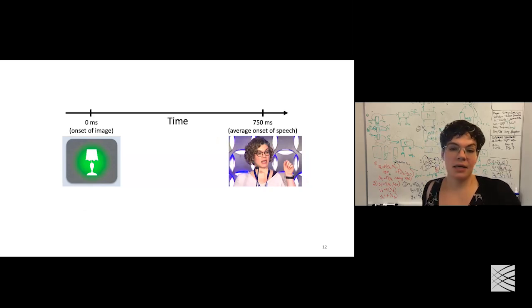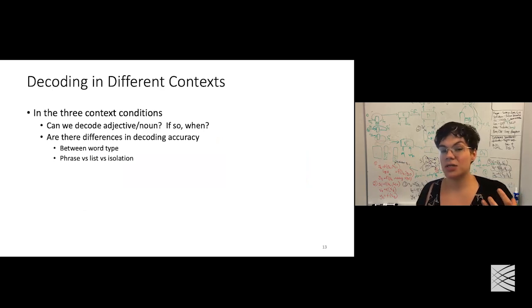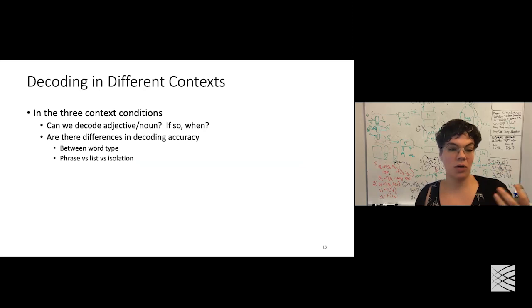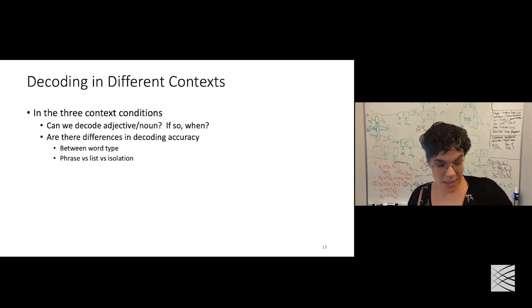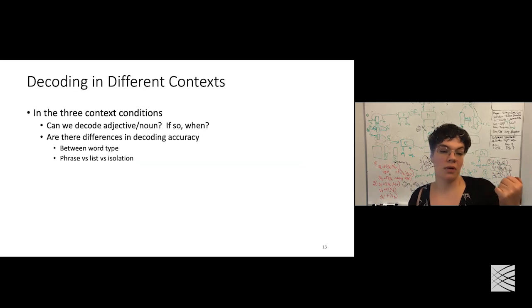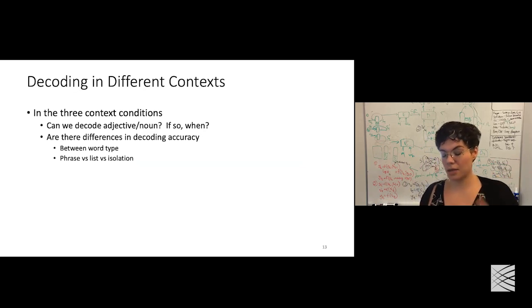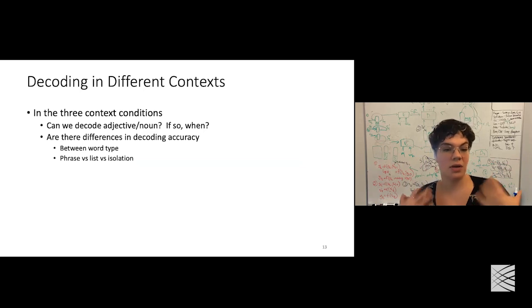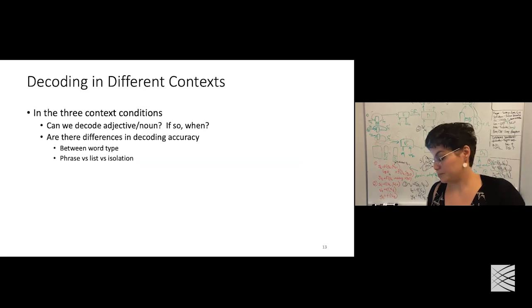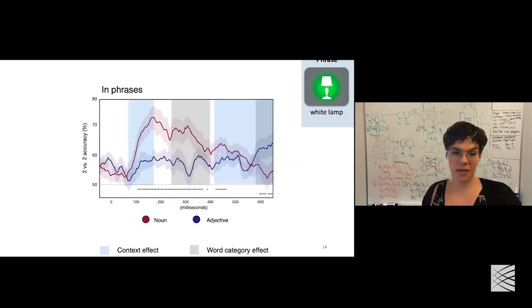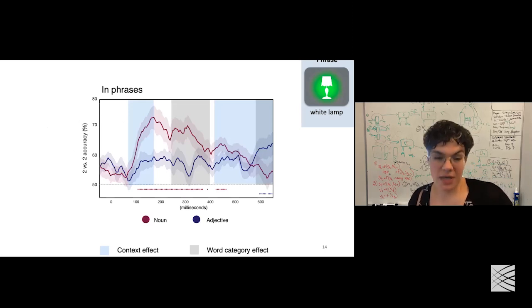Are there differences as an effect of the word type or the condition you see the image in? The first thing we'll talk about is when we can see the adjective and noun. We'll go through each of the three conditions. In the phrase condition, the person says the color and identity — for example, 'white lamp.' The dots along the bottom indicate when the corresponding line above is above chance. Early on, the noun representation dominates between 100 and 400 milliseconds, even though you're planning to say a phrase that includes both words.